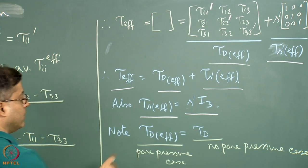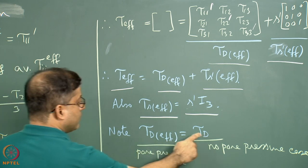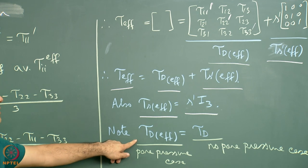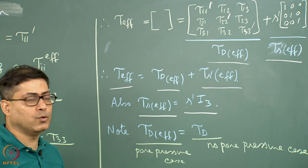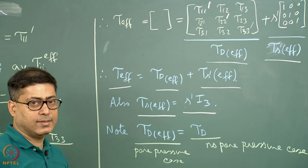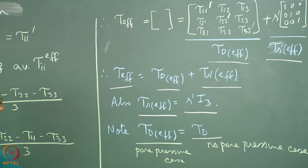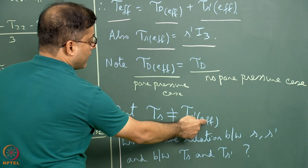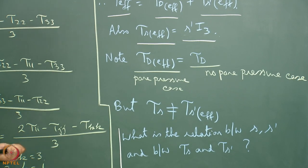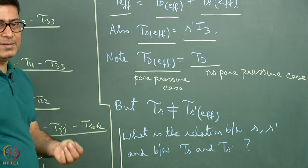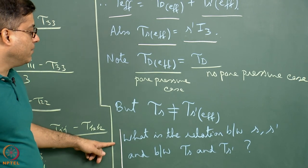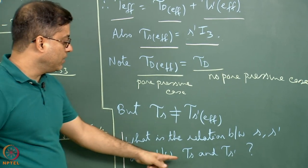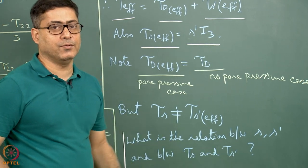One interesting observation: tau_D_effective is the same as tau_D. The deviatoric stress matrix in the pore pressure case is the same as in the no-pore-pressure case. However, the spherical stress component tau_S is not equal to tau_S_effective. The exercises for viewers are: what is the relation between S and S', and what is the relation between tau_S and tau_S_effective?